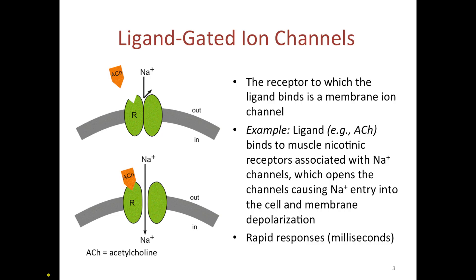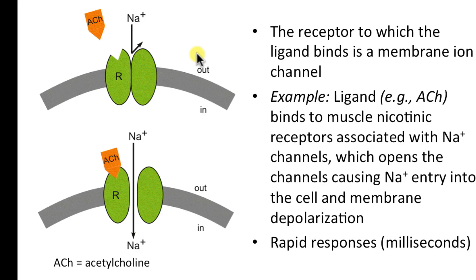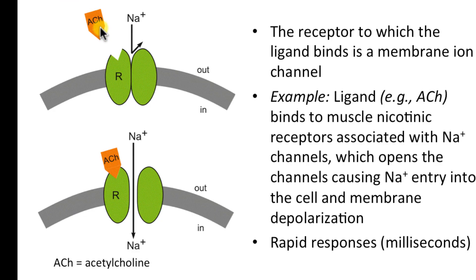Let's begin by looking at ligand-gated ion channels. These are receptors found on cell membranes that are coupled to ion channels — protein structures that permit ions such as sodium, potassium, or chloride to move from the outside to the inside, or from the inside to the outside of the cell. In this particular example, we have a sodium channel, and the ligand is acetylcholine, a neurotransmitter. When acetylcholine is released by motor neurons in skeletal muscle, it binds to a site on the sodium channel receptor.